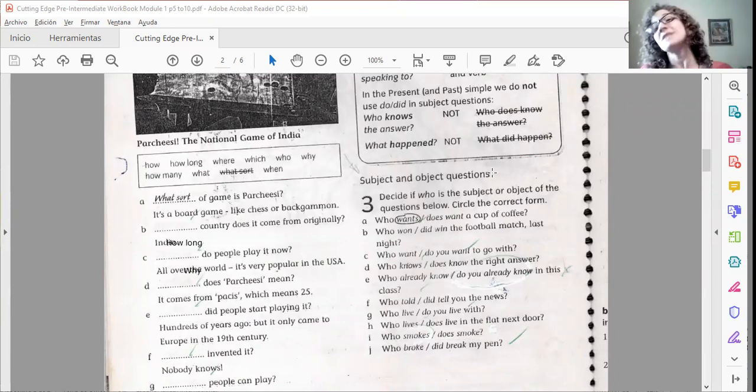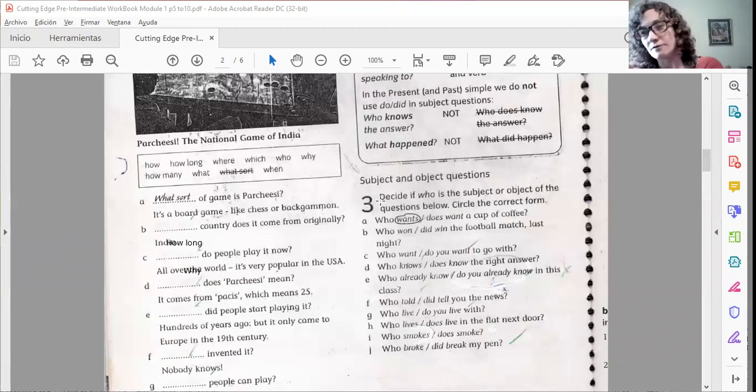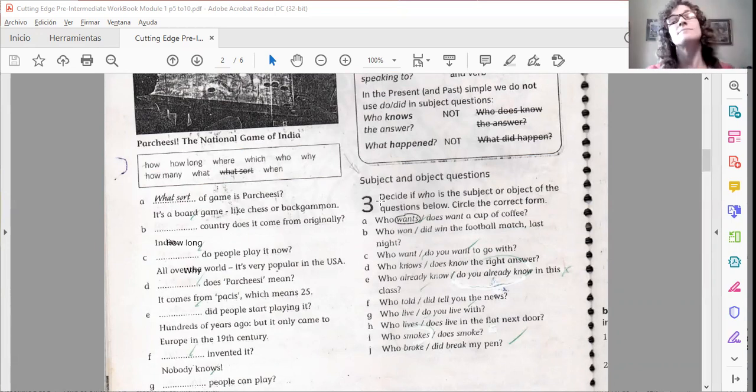So let's see this in the field, en la práctica. It says subject and object questions. Just the thing we have been talking about. Decide if who is the subject or object of the questions below. So we have to circle the correct form for the question. Letter A, it's an example. Who wants or who does want a cup of coffee? Which is the correct one? Who wants a cup of coffee. Stop the video, solve the other questions, and then play it again to check your answers. Who won or who did win the football match last night? Who won? Quién ganó? Quién hizo esta acción de ganar el partido de fútbol?